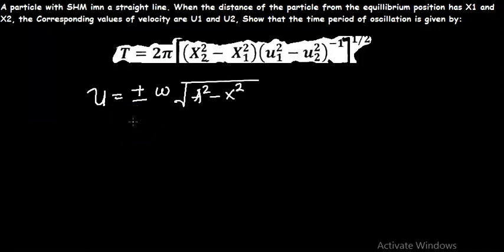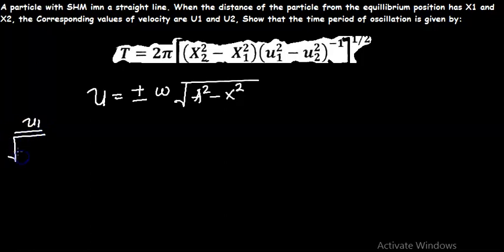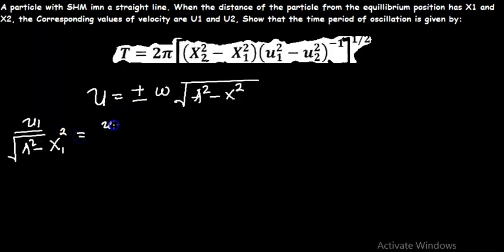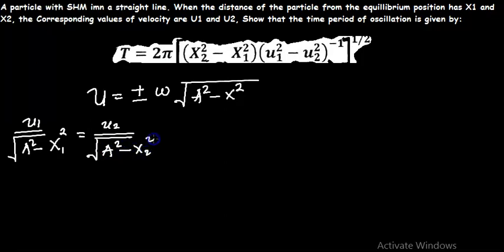We are given x1, v1, x2, v2 — specific values for displacement and velocity. Considering the ratio, we have v1 over v2 equals the square root of A squared minus x1 squared, all over the square root of A squared minus x2 squared.